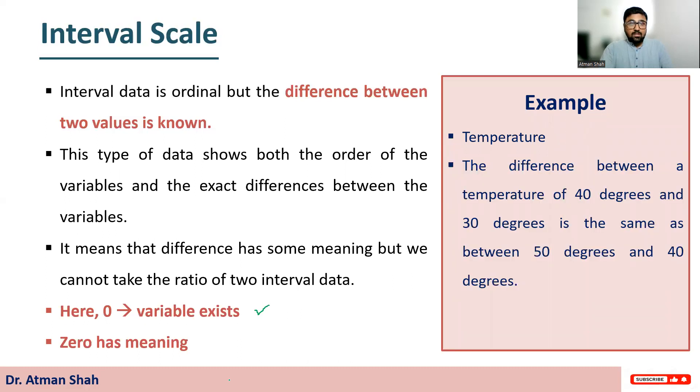Here, the difference between a temperature of 40 degrees and 30 degrees is the same as between 50 degrees and 40 degrees. That means difference has meaning. So interval scale possesses all the properties of ordinal data. Now, here you see when we have zero degrees Celsius, we have the data point. That means zero has meaning.